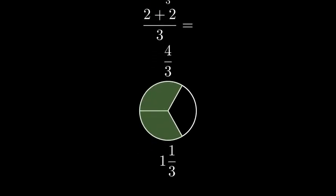We can also write this as a mixed number, one and one-third. To understand why this is one and one-third, notice that three-thirds make one whole, and we have four-thirds total. So that's one whole three-thirds plus one more third.